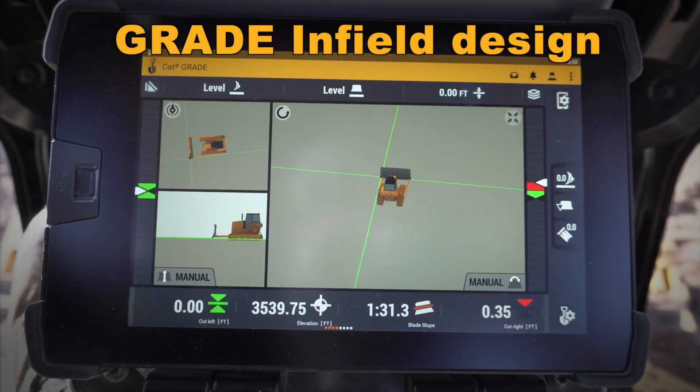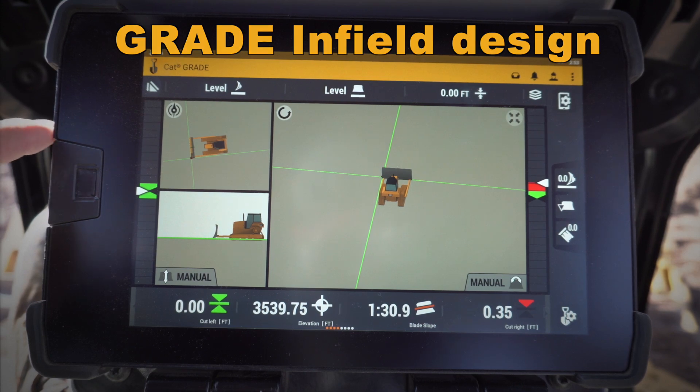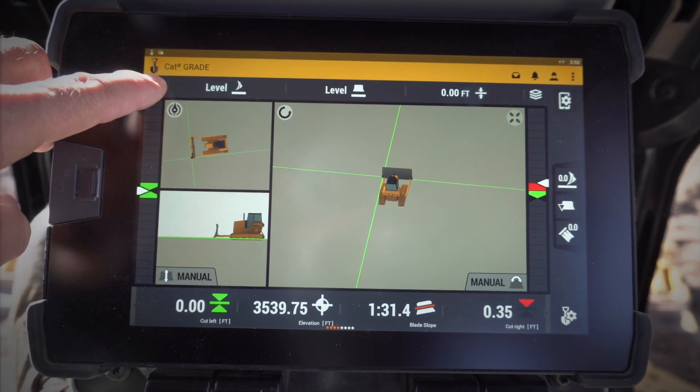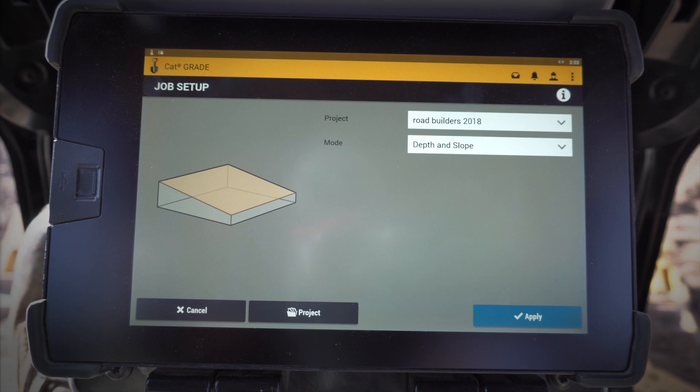Let's take a look at some of the new features in the new Cat Grade with 3D monitor on the next gen D6. What we're going to do here is create a new type of job.